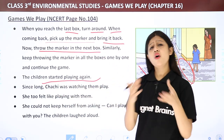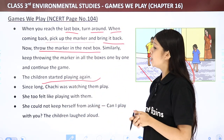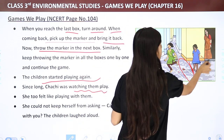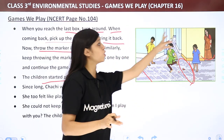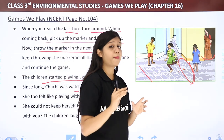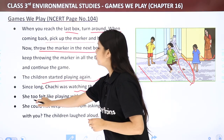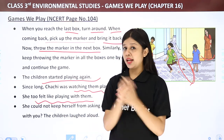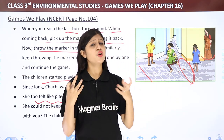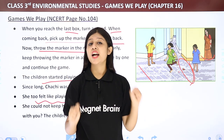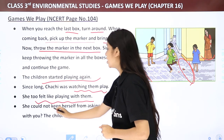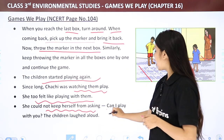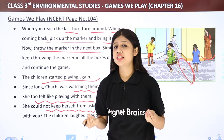Nandita understood how to play Stapu and the children started playing again. Since long, Chachi had been watching them play, and she too felt like playing with them. Because she could not keep herself from asking, she said: 'Can I play with you?'